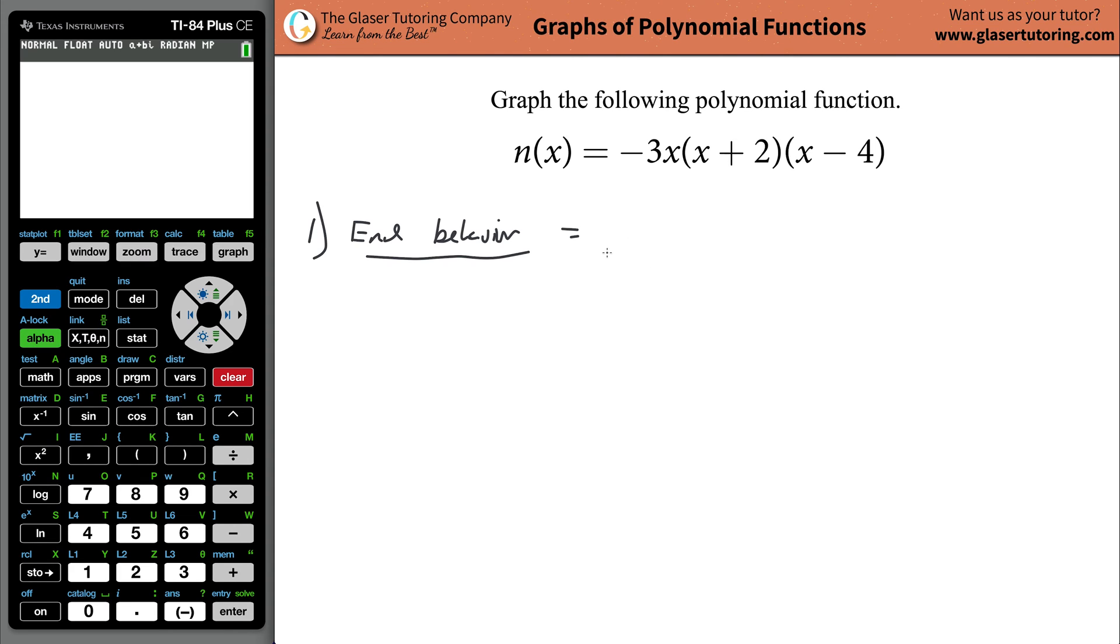When we look at this particular function, we can determine the end behavior by looking at the summation of all of the powers of all of the factors that we have. I'm going to put this in parentheses because that's technically another factor. The exponent there is 1, the exponent here is 1, and the exponent there is 1. When I sum these powers up, when this is in fully factored form, that number of 3 tells me something.